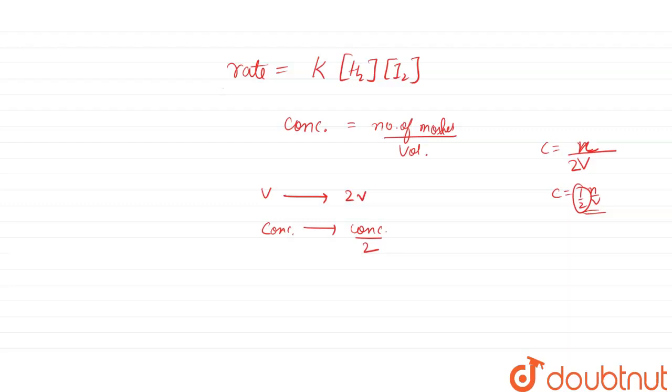For this, can we write the new rate law? The new rate equals K times the new concentration of H2, which will be half, times the new concentration of I2, which will also be half.